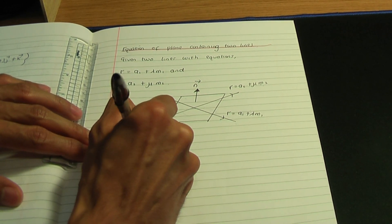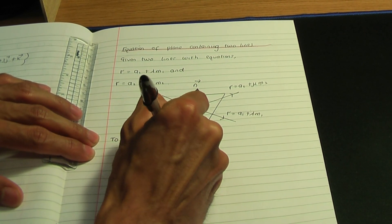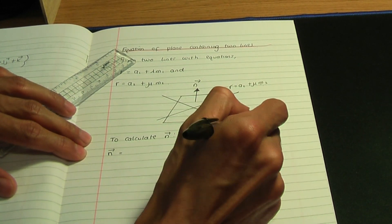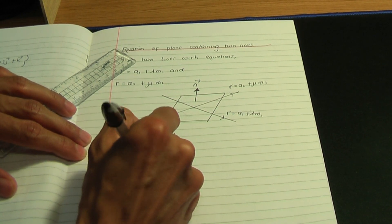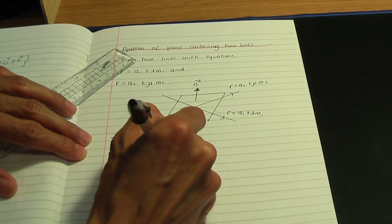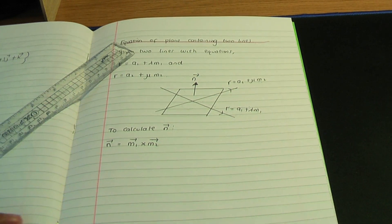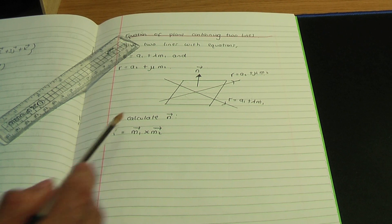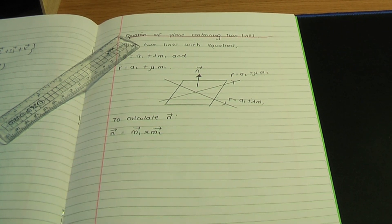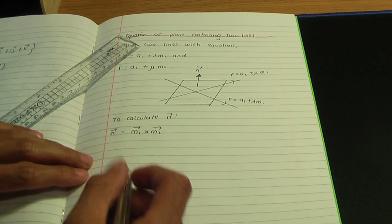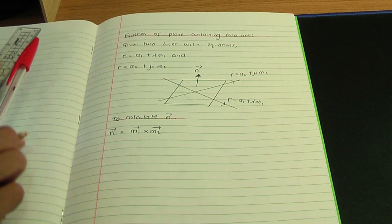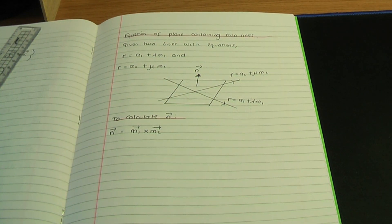To calculate our normal vector n, we need to calculate the cross-product of the direction vectors: m1 cross m2. I did a video previously on how to calculate that cross-product using the determinant of a 3x3 matrix. That's very important — working out n, the normal vector.